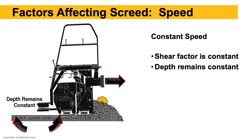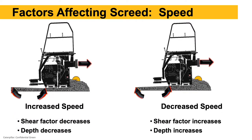The other big factor affecting paver operation is speed. At a constant speed, the shear factor is constant and depth remains constant. If we increase speed, the shear factor decreases and depth is going to decrease — the mat will get thinner without touching the screed controls. If we slow the paver down, there's more resistance of the mix on the face of the screed, the free-floating screed wants to rise up, and mat thickness will increase.